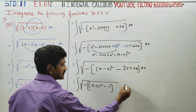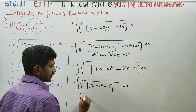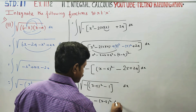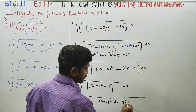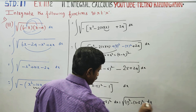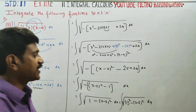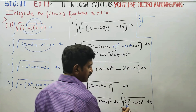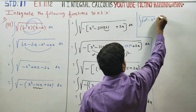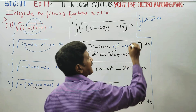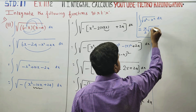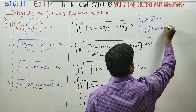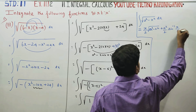Integration of minus of (x minus 5) whole squared. This can be written as square root of 1 squared minus (x minus 5) whole squared dx. This is a ready-made formula — recall: integration of square root of a squared minus x squared dx equals x by 2 times square root of a squared minus x squared.